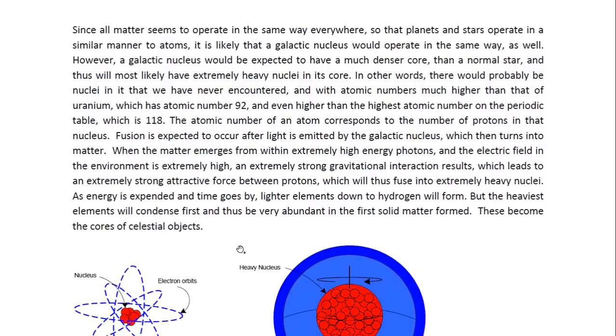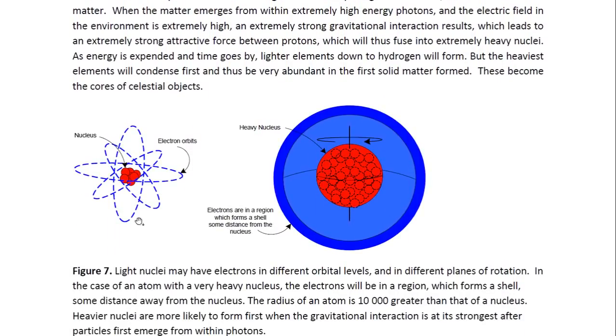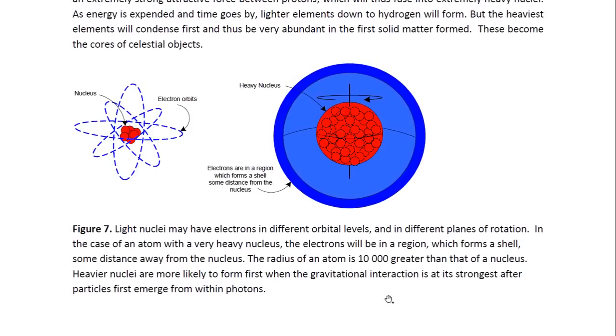What we see here is what atoms look like. These are light nucleus, and it would have less electrons than a very heavy nucleus. A very heavy nucleus would have a region in the form of a shell at the outer edge of the atom where the electrons would be found. They occupy this shell-type region at the outer edge of the atom.